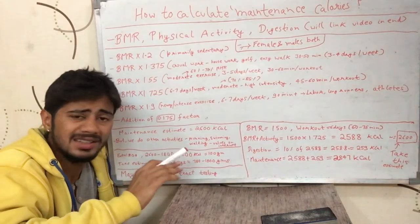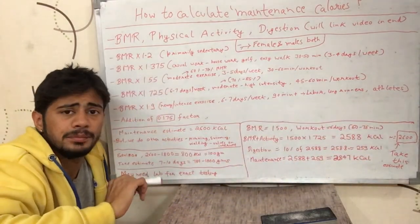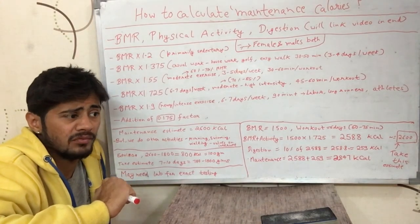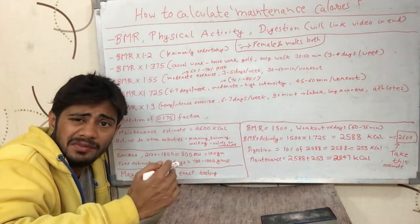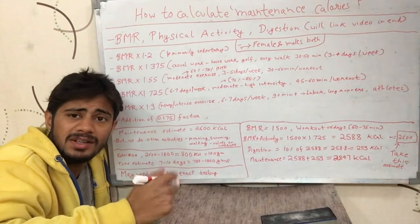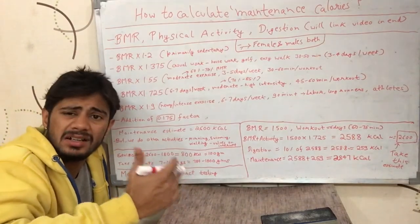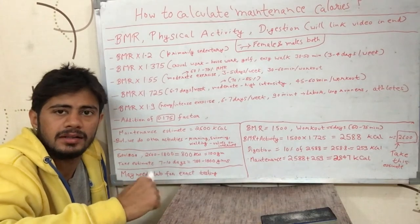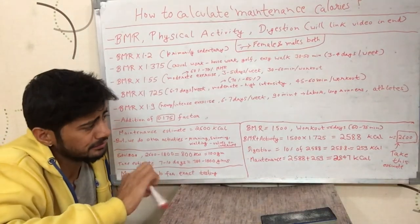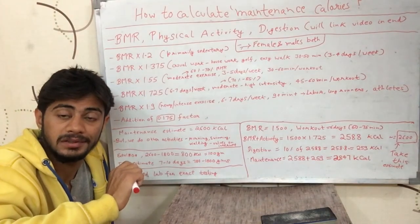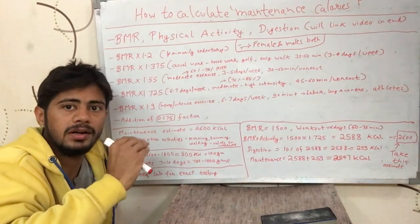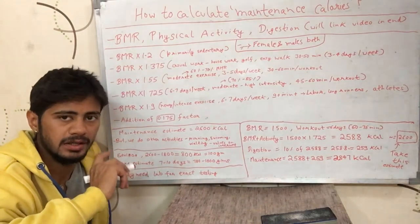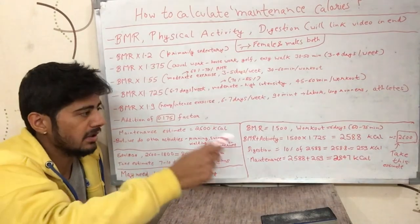We got an estimate of about 2600 calories burned each day. This was just an estimate — the actual number might be 2450, 2500, 2700, or 2750. It does not vary by 300 or 400 most of the time, but it can vary by 100, 150, or maybe 200. So how do we get a more accurate number? We cannot get the exact number, but we can be a little more accurate.